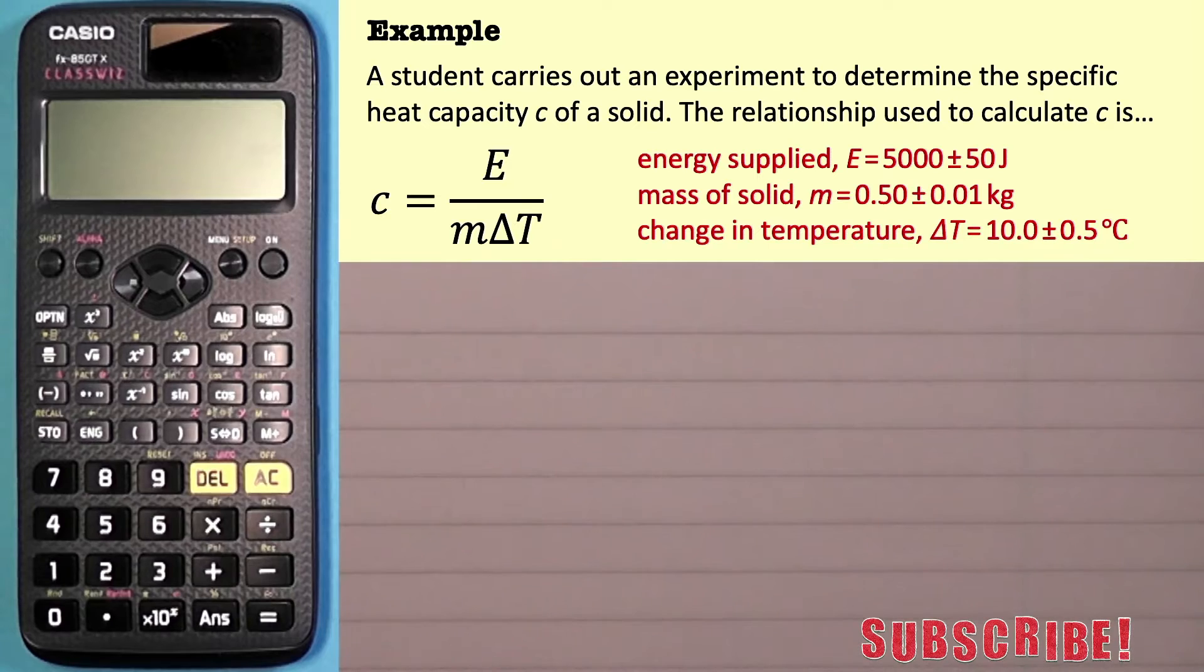The question says a student carries out an experiment to determine the specific heat capacity C of a solid. The relationship used to calculate C is, and you probably know this one from National Five Physics, C is equal to E divided by M delta T. The only thing is it's rearranged obviously.